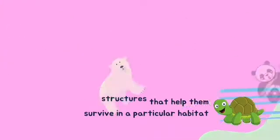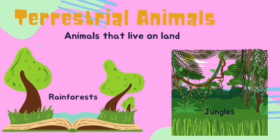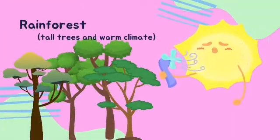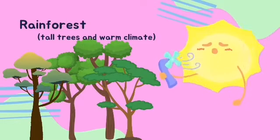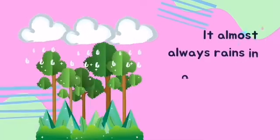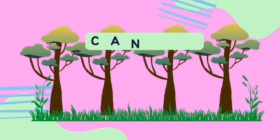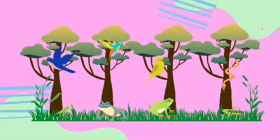Animals that live on land are called terrestrial animals. Some terrestrial animals can be found in rainforests or jungles. A rainforest is a forest with tall trees and warm climate. It almost always rains in a rainforest. The trees in a rainforest form a roof or canopy that keeps most of the sunlight from reaching the ground. Insects, birds, snakes, and frogs live in the canopy.